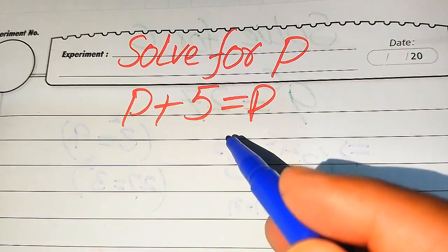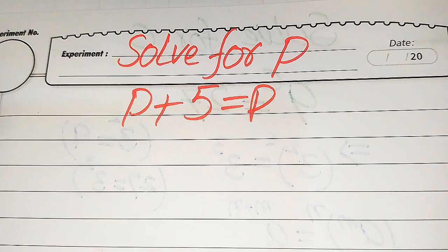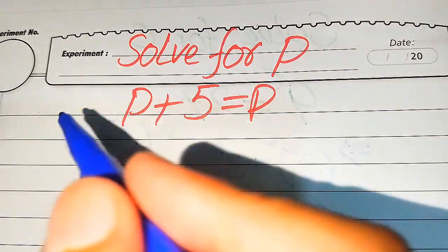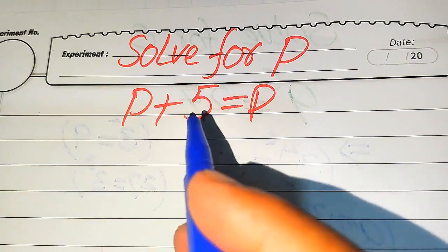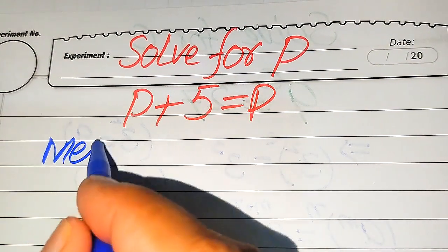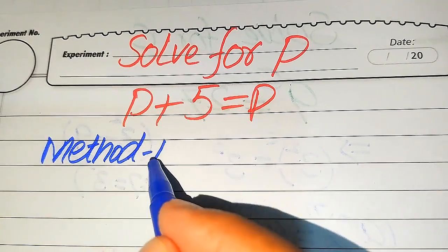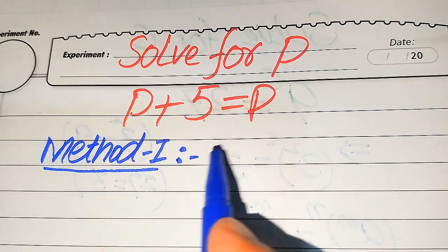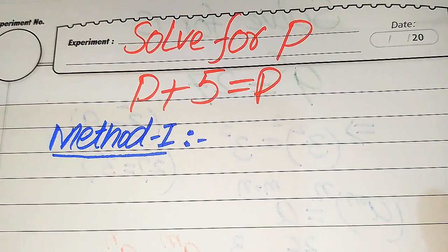If you look directly at the equation, you cannot find any values of p. But here I can give you a nice trick in which you can easily get the values of p. In the first method I will give you the trick to find the values of p, and in the second method I will solve this problem directly. Please watch both of these methods.